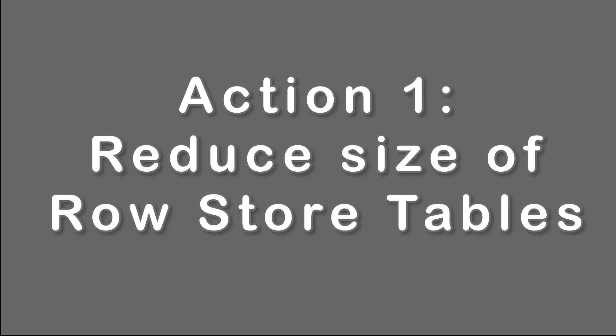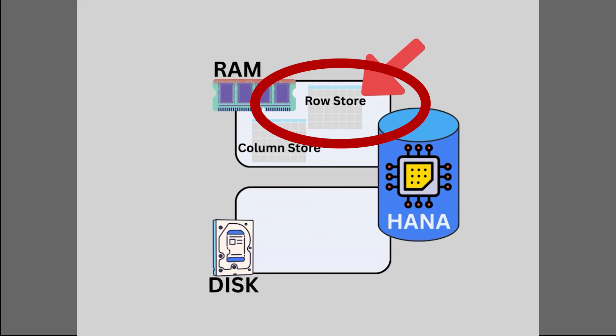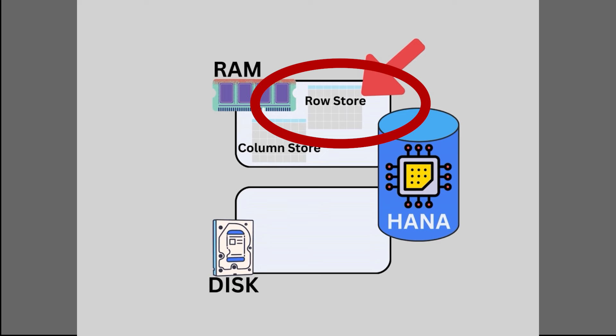Action one: reduce the size of row store tables. This one deserves a little more explanation before it makes sense. A HANA database is primarily designed as a columnar database — I say primarily because it actually does both columnar and traditional row-based. Tables categorized as column-oriented are stored in the column store memory area, and each column of a column store table can be loaded into memory on demand. Tables categorized as row-oriented are stored in the row store memory area, and the entire table has to be loaded into memory to access one row, which means they are loaded into memory on database startup and remain in memory.